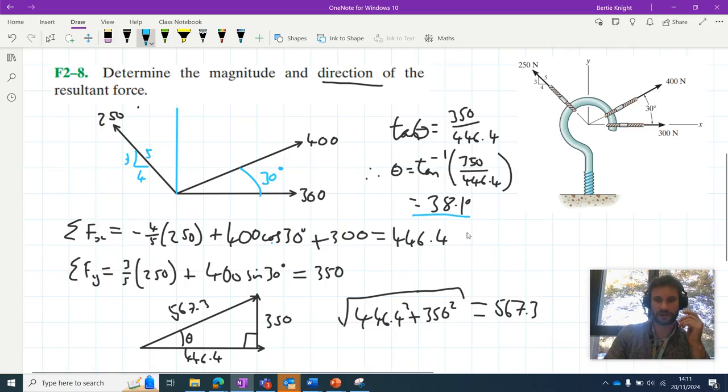And there we go. These are our two solutions. So we have a magnitude of 567.3 newtons and we have an angle with the horizontal of 38.1 degrees. So those are the solutions to our problem here. If you have any questions or comments about that problem, please feel free to leave them in the comment section down below. Otherwise, thank you very much for watching.